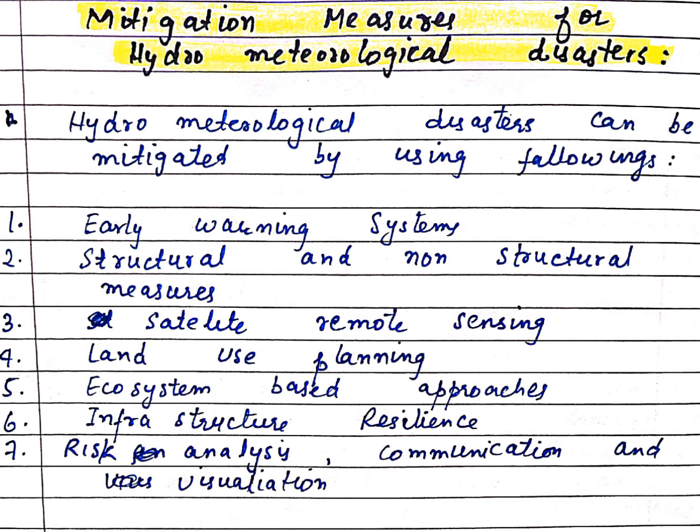Second, structural and non-structural measures: our road slopes and bridges should be built in a very structural way. For non-structural measures, we should spread awareness programs so that the impact of these disasters can be reduced to some extent.